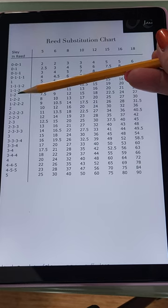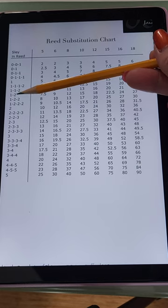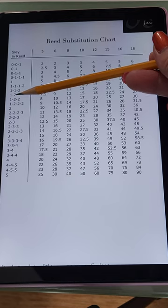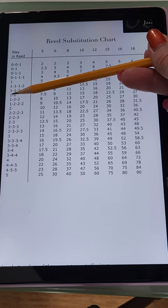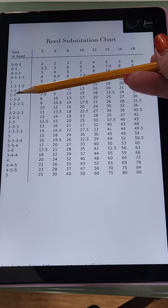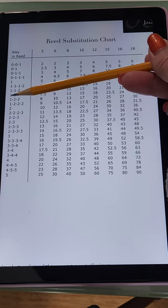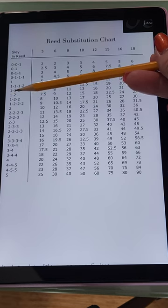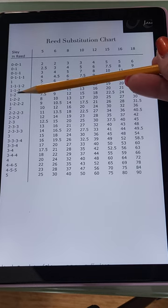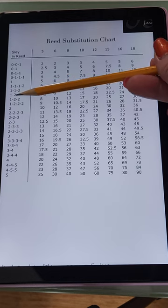In this case you would slay two threads in one dent and then one thread in the next dent, two threads in the third dent, one thread in the fourth dent, and so on and so forth until you finish all of your threads.